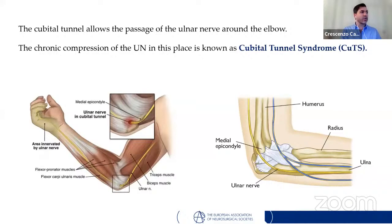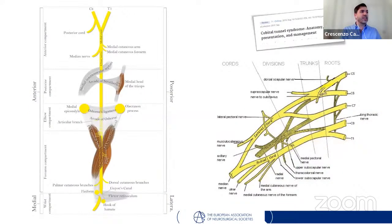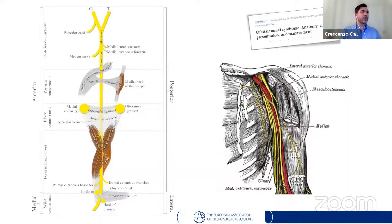The ulnar nerve originates from nerve roots C8 and T1, and occasionally some C7 fibers, forming the medial cord of the brachial plexus. The medial cord gives off numerous branches before bifurcating into two terminal branches — one giving the median nerve, the other becoming the origin of the ulnar nerve. The ulnar nerve then courses down the arm medially to the brachial artery into the anterior muscular compartment, up to the insertion of the coracobrachialis muscle.